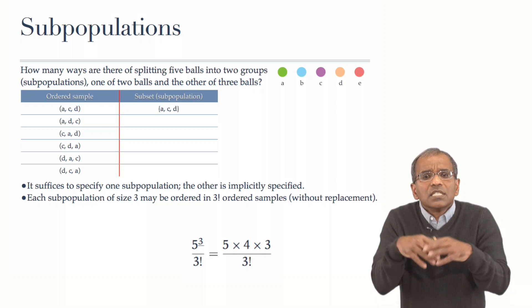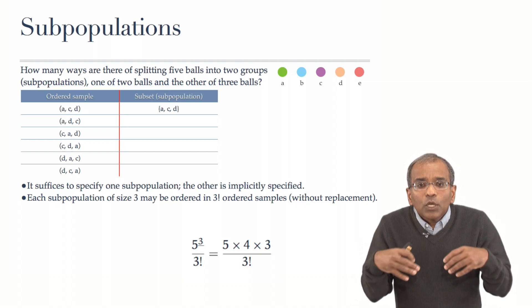Of course, this simplifies. Five times four times three divided by six, and this is ten. But the actual answer is not particularly germane for our purposes.